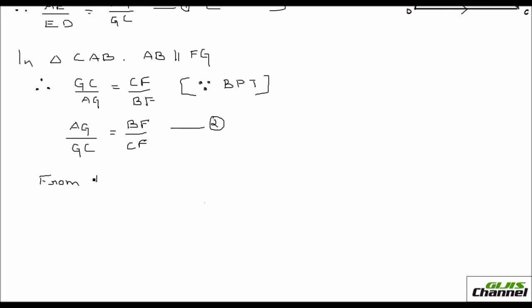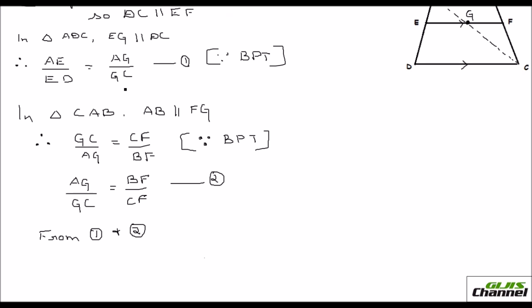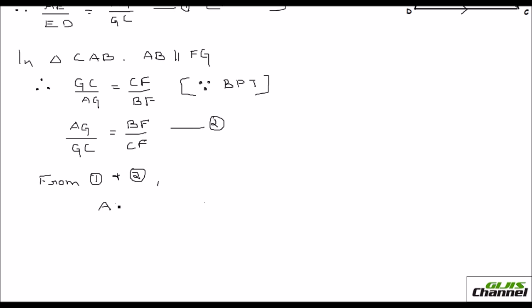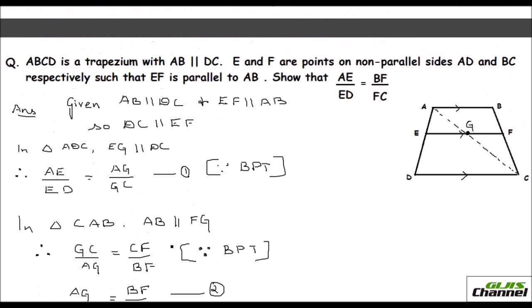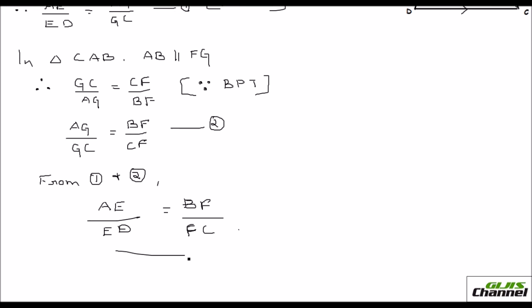Now from 1 and 2, what do you get? From 1 and 2 because, just look, in equation 1 you have AG over GC is equal to AE over ED. In equation 2 also you have got AG over GC is equal to BF over CF. So I can say from 1 and 2, AE over ED is equal to BF over CF. So is this what they have asked? Yes. So you have proved it. Did you get that? Just turn this trapezium into two triangles and just prove how you do when you use the BPT theorem.